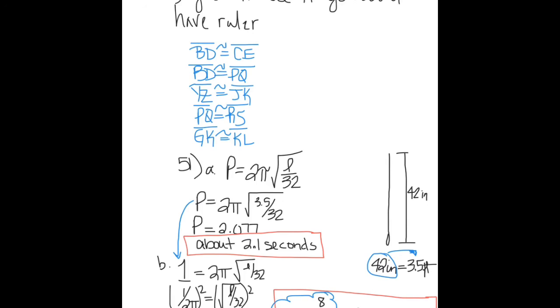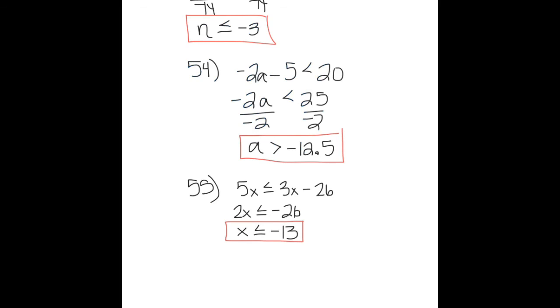Numbers 52, 54, and 55 are just solving inequalities. Number 52: n is less than or equal to negative 3. Number 54: a is greater than negative 12.5. And number 55: x is less than or equal to negative 13. The important thing to remember here is that when you multiply or divide by a negative, you have to flip the inequality.